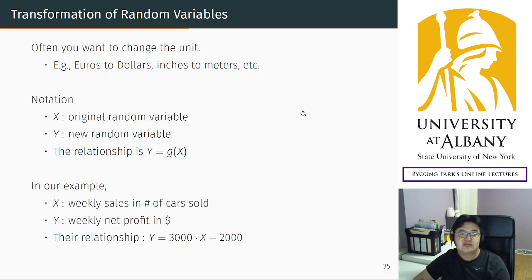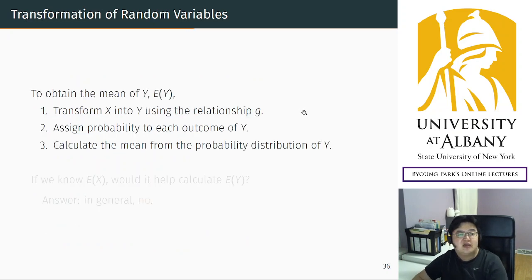Now, what we did in the earlier slide is calculate the mean of the expected value of the new random variable. This is our transformation. What we did here is we first transformed X, number of cars, into net profit using the given numbers, like three thousand dollars, two thousand dollars, and then attached probability to the new random variable.